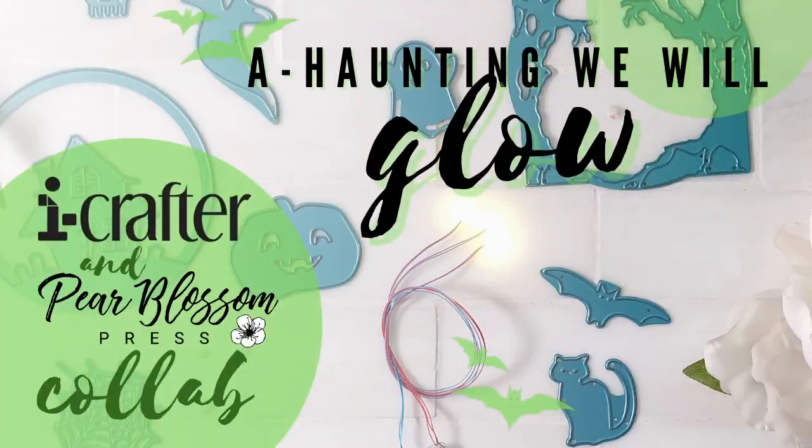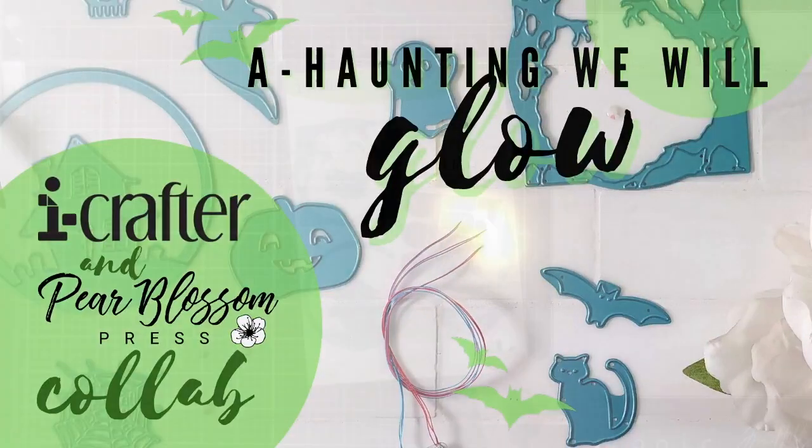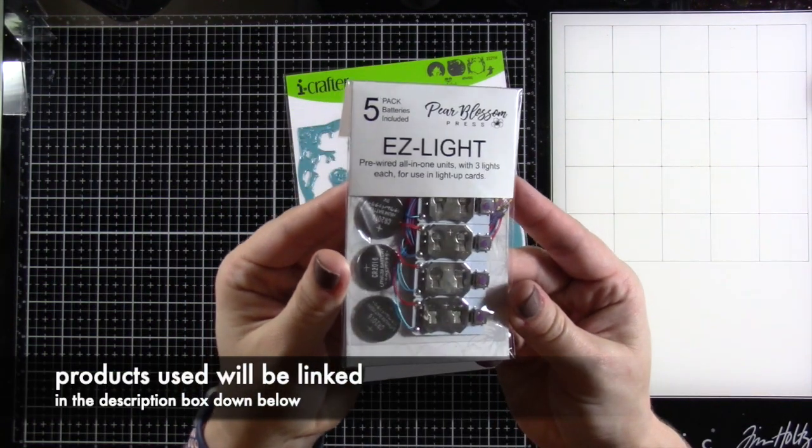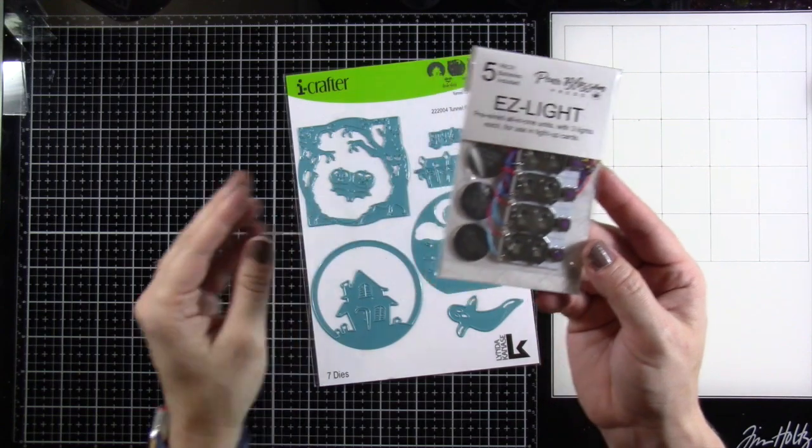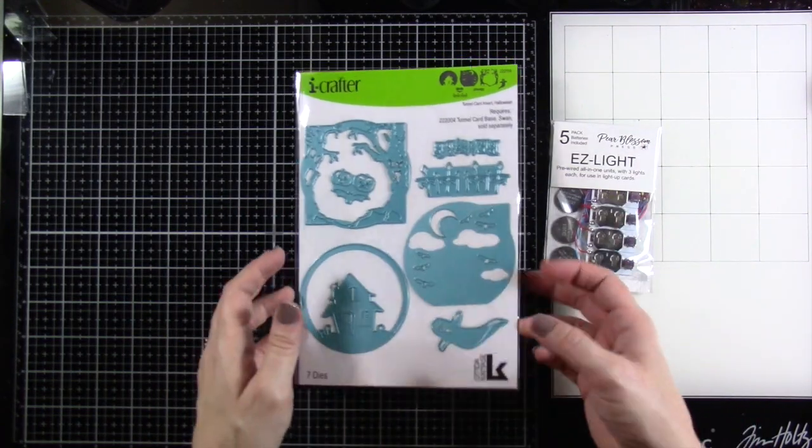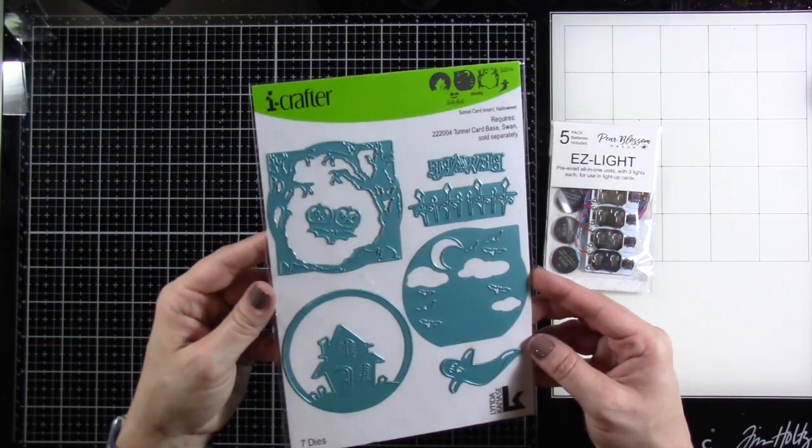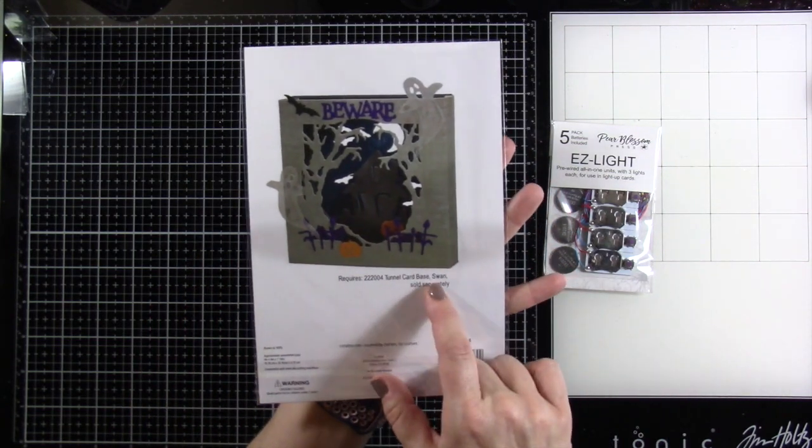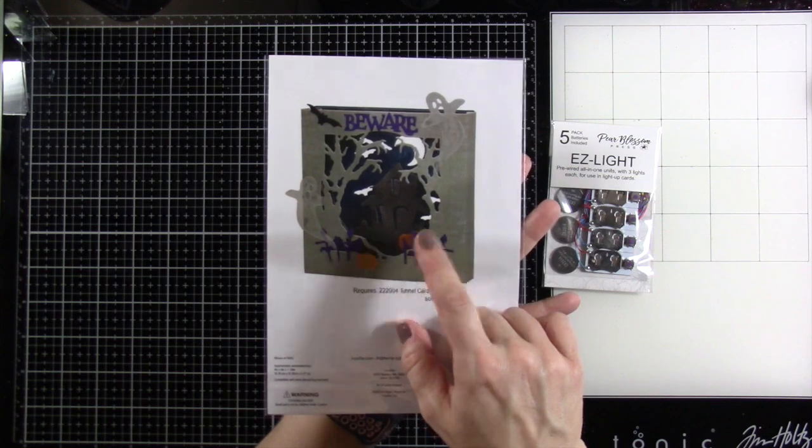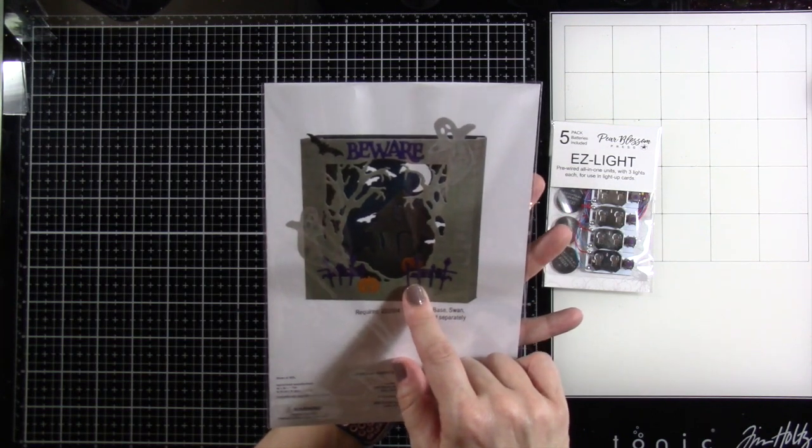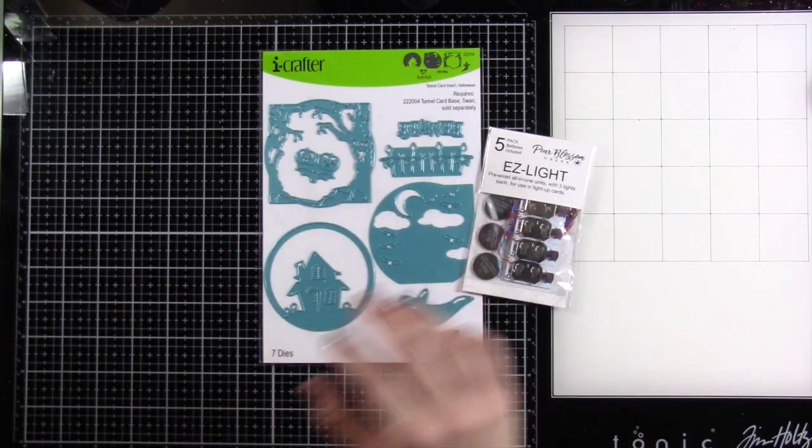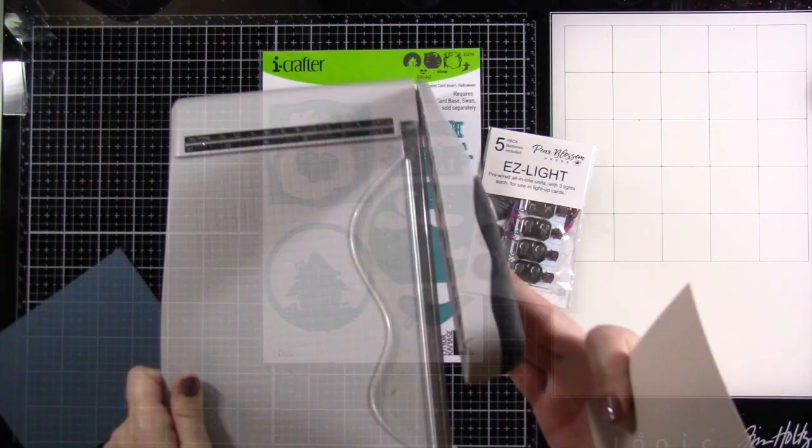Hello my friends, it's Cassie. Welcome back to my channel for another video. Today we have a special one. Here are the Easy Lights. We're going to be making a light up card and then we have the iCrafter tunnel card insert. This one is Halloween and it does make for a box card if you have the other piece, but today we're just going to use this piece to make a card. So this is an add-on and we're going to make a card out of it. It's super cool.